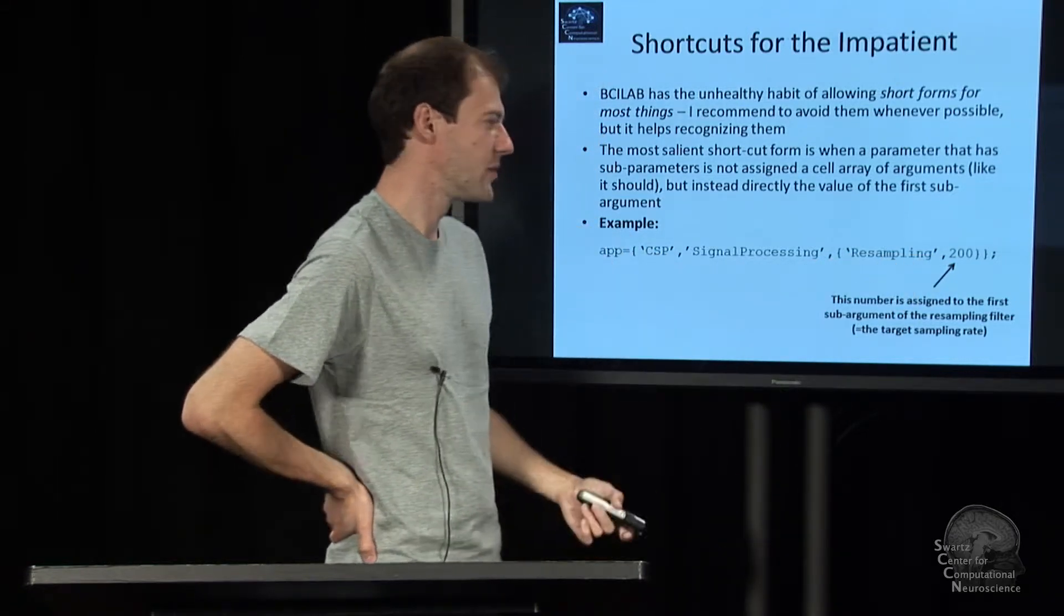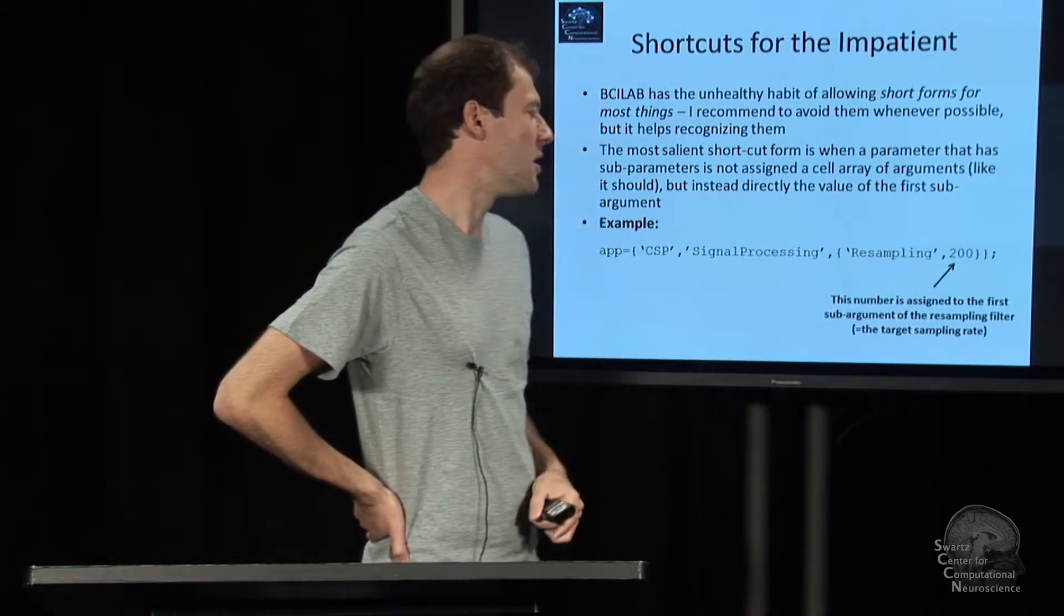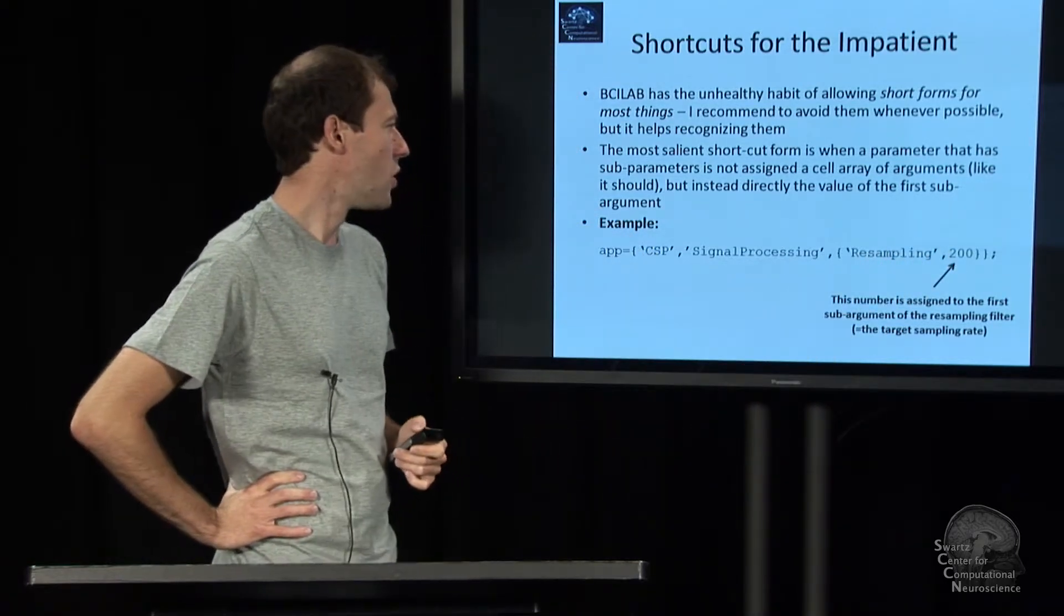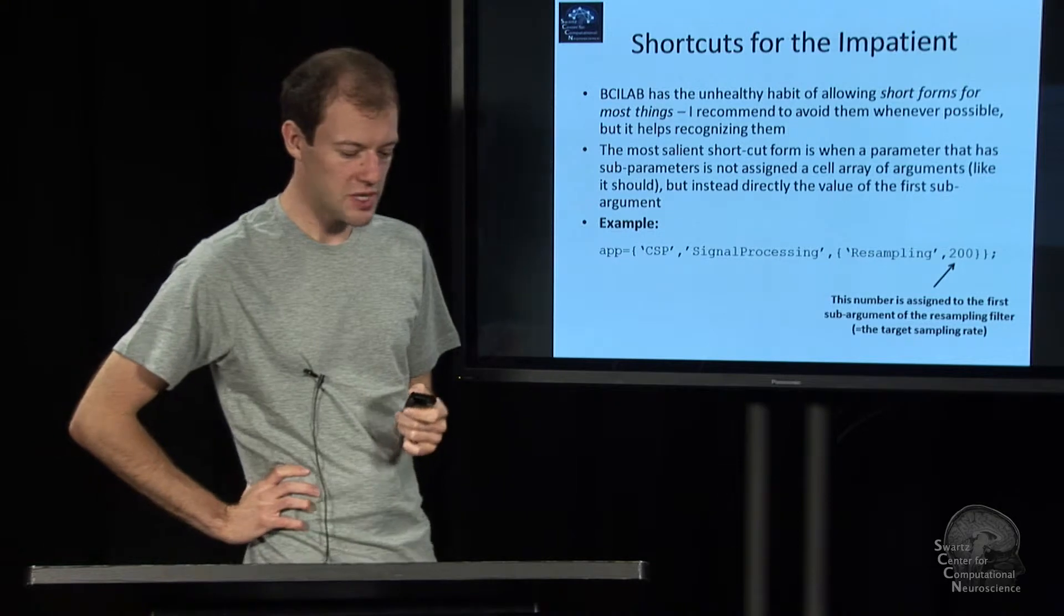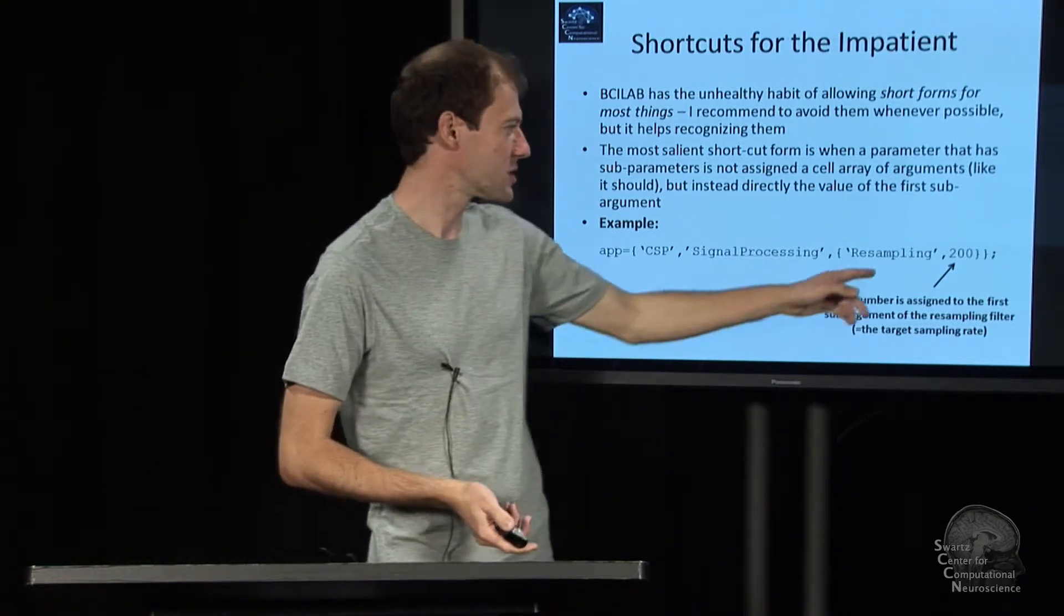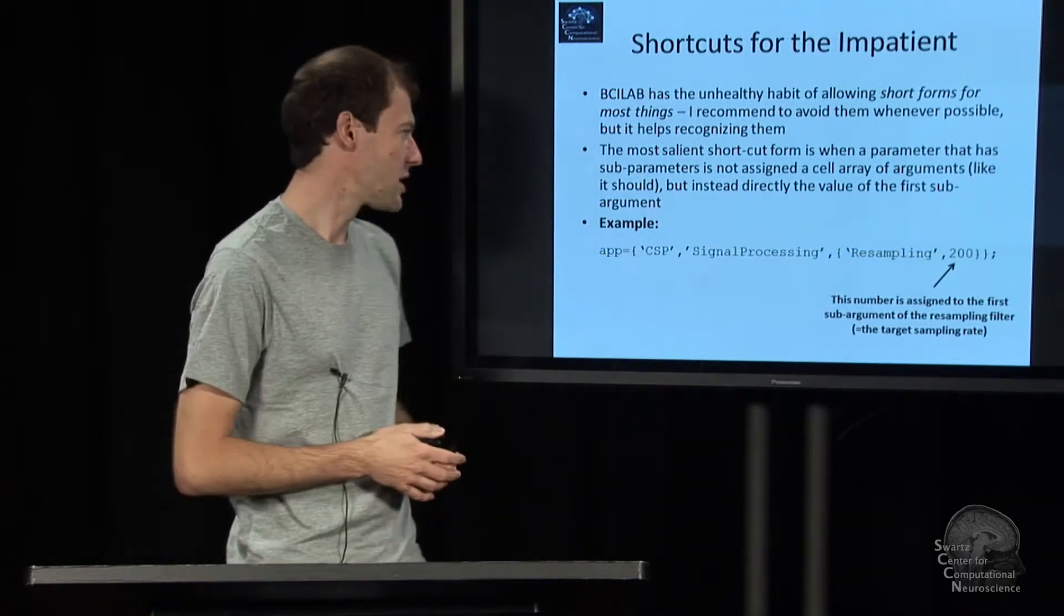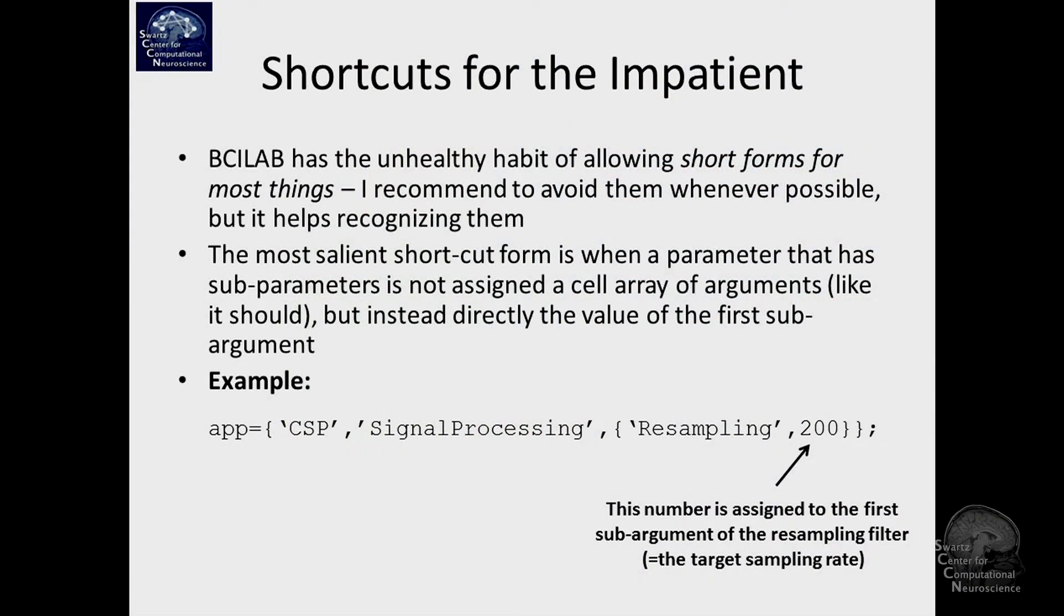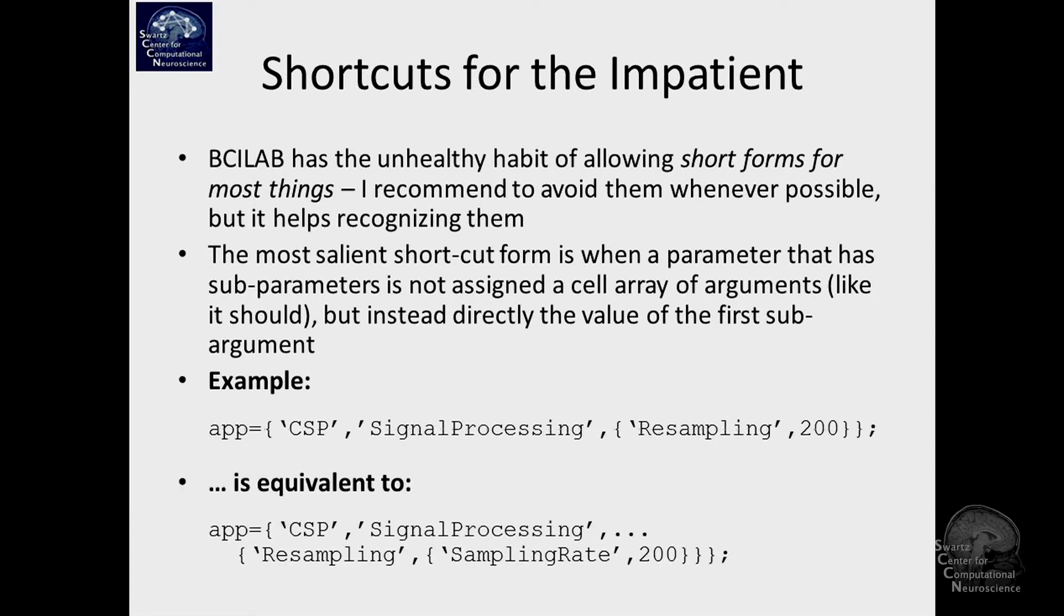Basically then it's implicitly understood as a cell array which assigns this to the first argument. Just generally there's shortcuts and they are basically as you would expect. Of course this is pretty intuitive, you can do it, it goes all across the toolbox, so you can use this kind of simplification everywhere. Here is the long form: signal processing, resampling, sampling rate, that corresponds to what we had in the GUI a couple pictures ago.